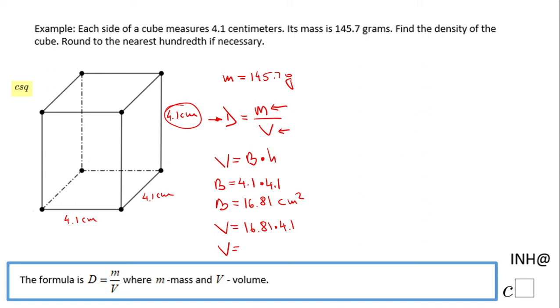Of course, this volume can be found by doing 4.1 to the third power. That's the simplest way. I prefer to use area of the base times the height. Now we can move back to density.